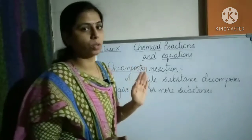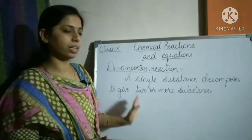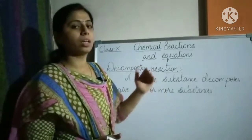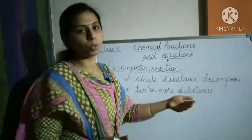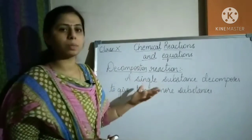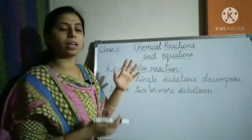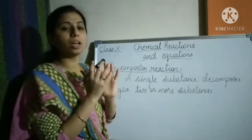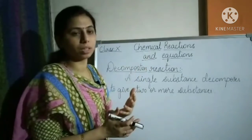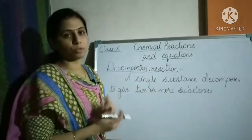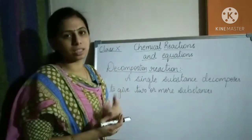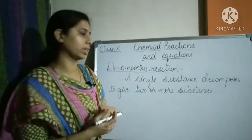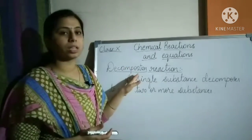In a decomposition reaction, there is only one reactant on the reactant side, which splits and breaks down to produce a number of products. To split or break down, energy is required — the reactant needs to be activated, so energy is utilized to split it into a number of products. That energy comes from an external source.